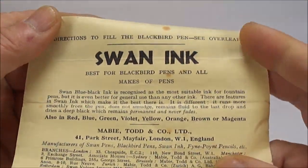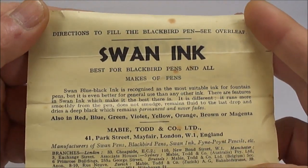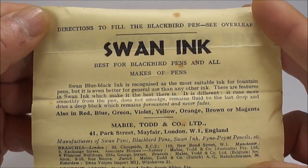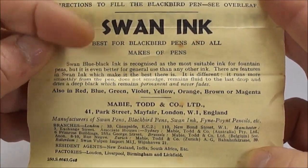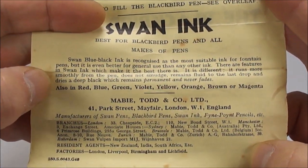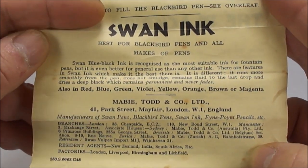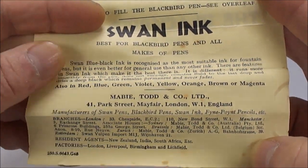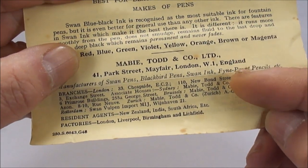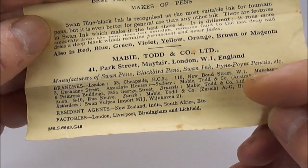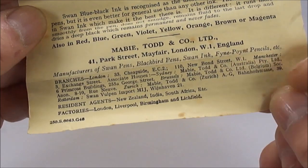If we turn it over, it tells you about actually using Swan Ink. It tells you about the different colors of inks you can get. Also in red, blue, green, violet, yellow, orange, brown and magenta. Mabie Todd and Company Limited, 41 Park Street, Mayfield, London. It gives you all the branches.